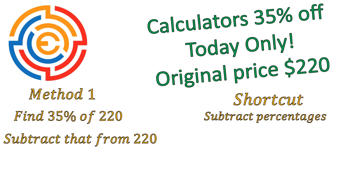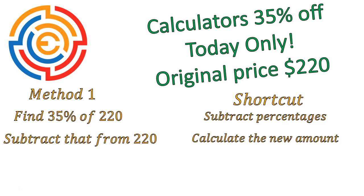In the shortcut version, we subtract the percentages, and then calculate the new amount. This is a little bit different, but it will get you the exact same number at the end. Let me show you.